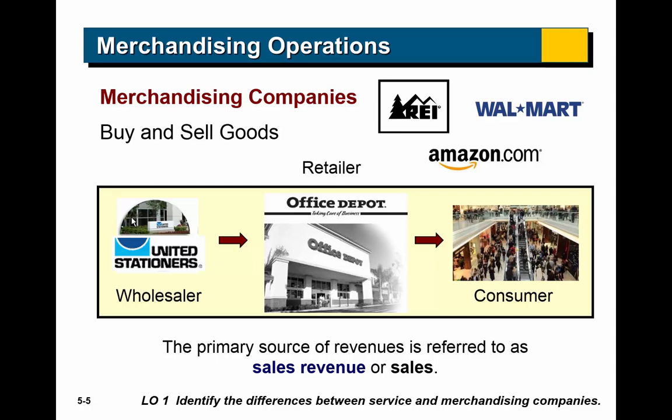There are wholesalers, who usually supply goods to retailers. Retailers supply those goods to consumers — you, me, and everyone else who buys stuff. Instead of calling it service revenue, merchandising companies typically call their revenue sales revenue, or sometimes just sales — that's the money they earn by selling stuff to people.